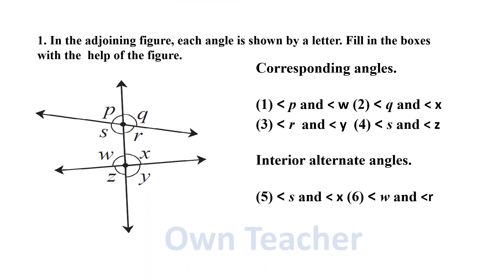Practice Set 2.1. In the adjoining figure, each angle is shown by a letter. Fill in the boxes with the help of the figure. First we will find corresponding angles. Angle P and angle W, angle Q and angle X are two pairs of corresponding angles. Angle R and angle Y, angle S and angle Z are two more pairs. So there are four pairs of corresponding angles in total.